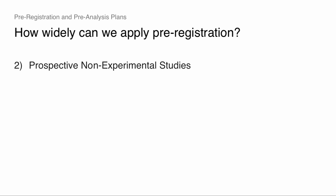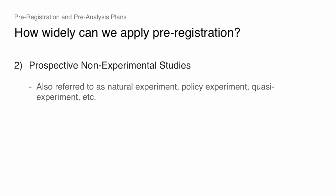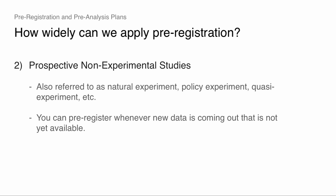Prospective non-experimental studies — this is another category. Prospective means pre-planned: you plan to collect data or get your hands on data before you have it. It's like a natural experiment, a policy experiment, quasi-experimental, or whatever term you want to use, and you still have a prospective research design. So you could pre-register whenever new data is coming out that's not yet available — a new census round, a new round of the PSID, a new round of a panel survey in Ghana. Before it's released, you can write down what you would run, and there's no way you could have mined that data.